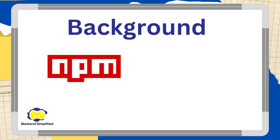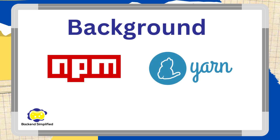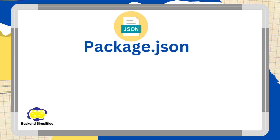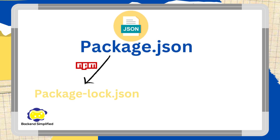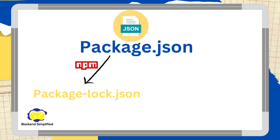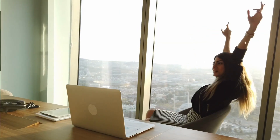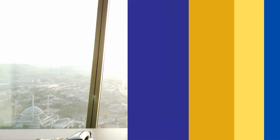NPM, which stands for Node Package Manager, was created in the early days of Node.js to handle packages. However, due to various issues over the years, Facebook developed an alternative called Yarn. Both of them check the package.json file and install packages. NPM creates a helper called package-lock.json, while Yarn uses yarn.lock. Let's dive in and start populating our table.